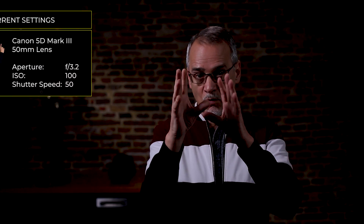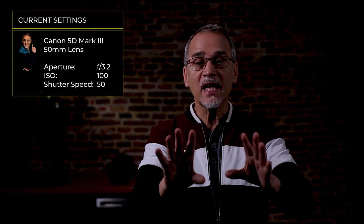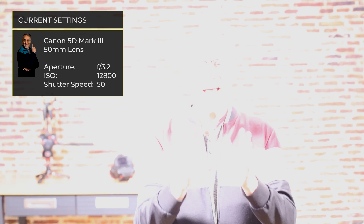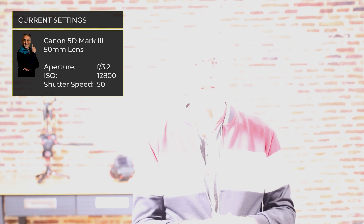Let's leave the aperture and shutter speed alone and just mess with the ISO so you can see the effect. At ISO 640, aperture 3.2, shutter speed 50 — that's the baseline. Now without changing anything else, I yanked the ISO down from 640 to 100 — it gets darker. Now I've run it up to 12,800, and the aperture is still at 3.2, shutter speed still at 50.